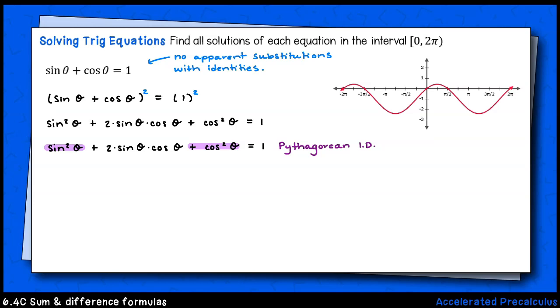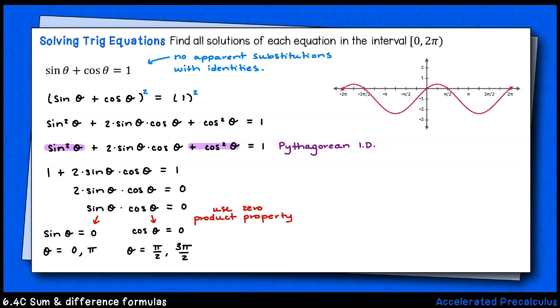There's that Pythagorean identity, sine squared theta plus cosine squared theta, which is equal to one. After making that substitution, the left-hand side is much simpler. I'll reduce this down algebraically to just sine theta times cosine theta equals zero.